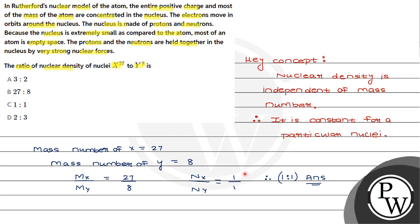So we can write the correct answer. It is option C, that is 1 is to 1. So I hope you understand the solution. Thank you.